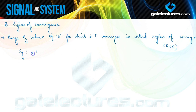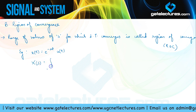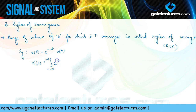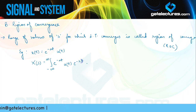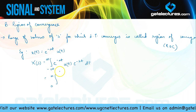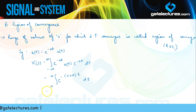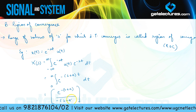Let us look at an example. Suppose we have a signal e to the power minus at times u(t), where a is some real number. To find the Laplace transform X(S), by definition it is the integration from minus infinity to infinity of e to the power minus at times u(t) times e to the power minus ST dT. Since u(t) is present, the limits become from zero to infinity, and combining the exponentials we get e to the power minus (s plus a) times t dT. Performing this integration gives e to the power minus (s plus a)t upon minus (s plus a), evaluated from zero to infinity.